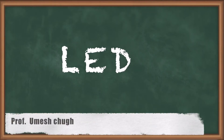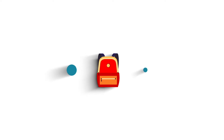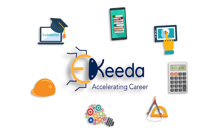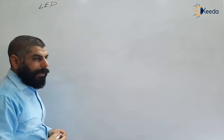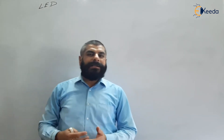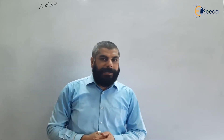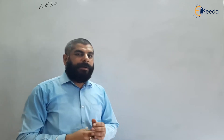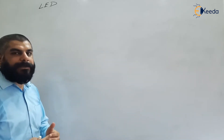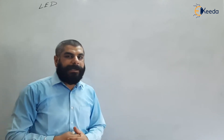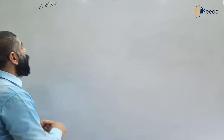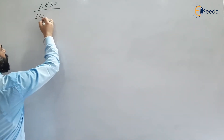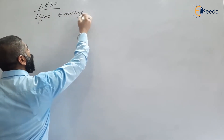In this video we will discuss about the LED, that is light emitting diode. We will cover how it is different from a PN diode, how light is generated, the materials used to prepare LED, and how it can be used as a light source. There are two types of optical sources: one is the laser and second is LED. LED is used to convert electrical energy into light energy which propagates through optical fiber.